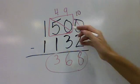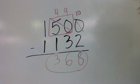This is what we call squaring off when you go to borrow and your neighbor's a zero.